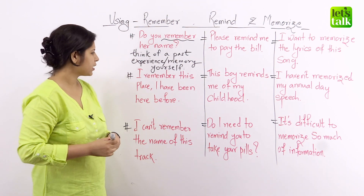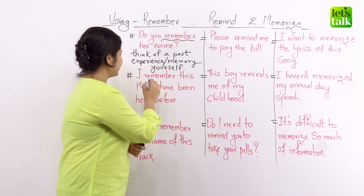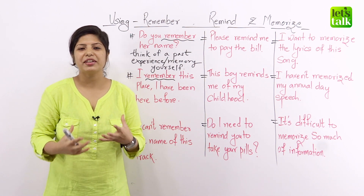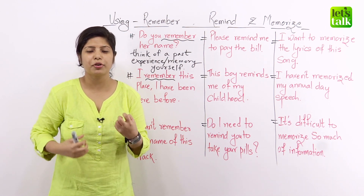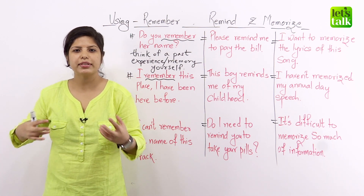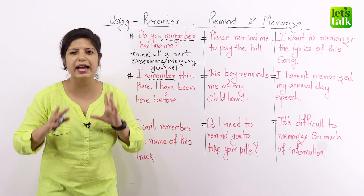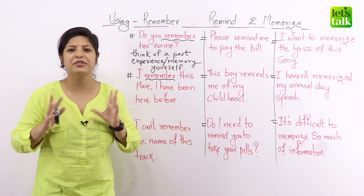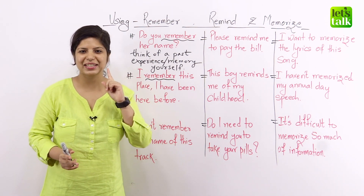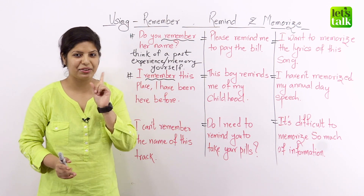The next example: I remember this place, I have been here before. Do you sometimes make these kinds of sentences? Whenever you go to a familiar restaurant or a familiar place after a very long time, you tend to tell your friends, 'You know what? I remember this place, I have been here before and I really love the food.' So here you are thinking of a past experience or a memory, and that's why you use the word remember.